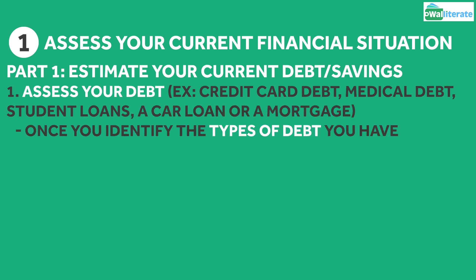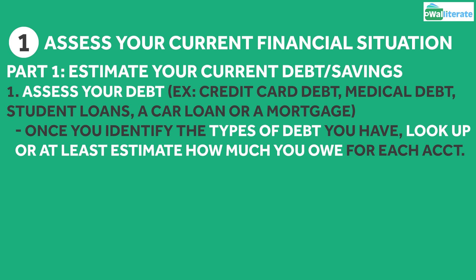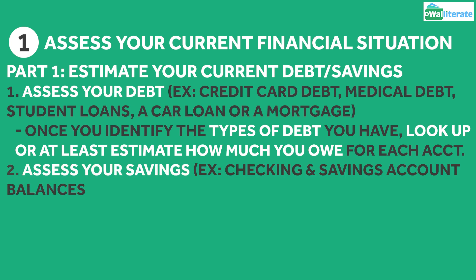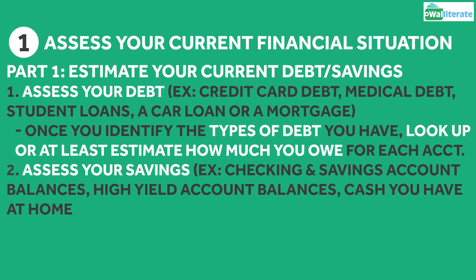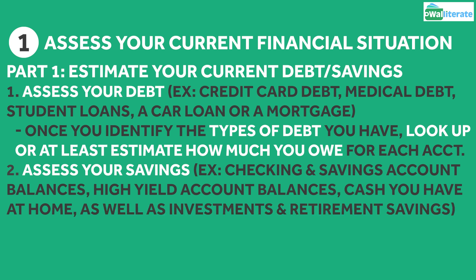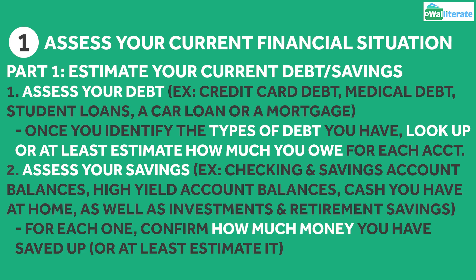Once you've identified the types of debt you have, look up how much you owe for each account. For your savings, this could include your checking and savings account balances, including any high-yield accounts you may have, as well as any cash you may have saved up in your home. You can also factor in investments and your retirement savings as well. For each fund, confirm how much money you have saved up.